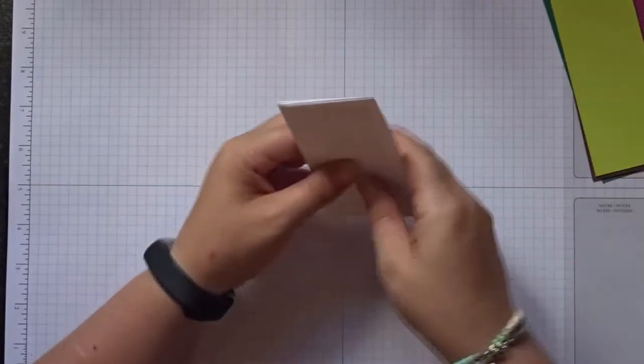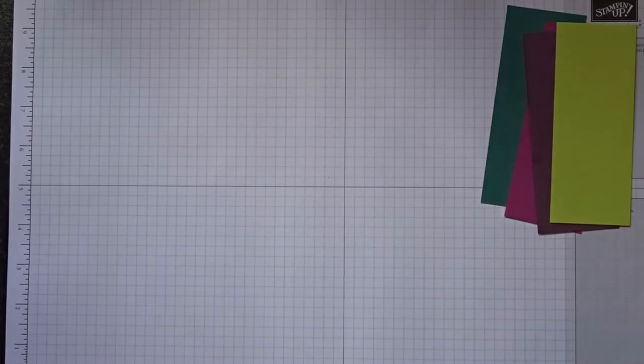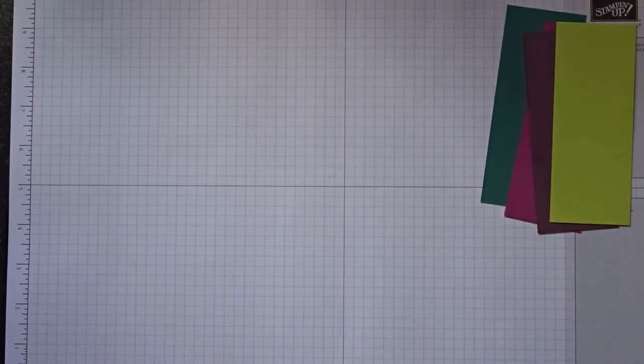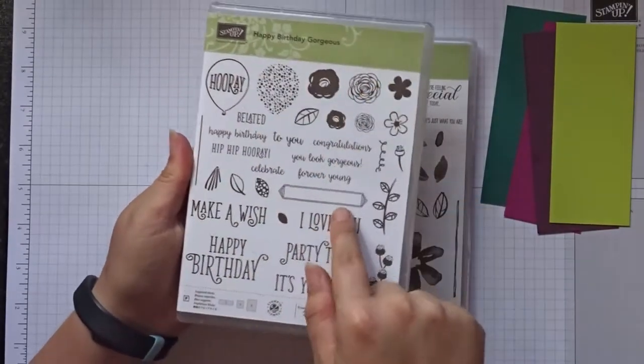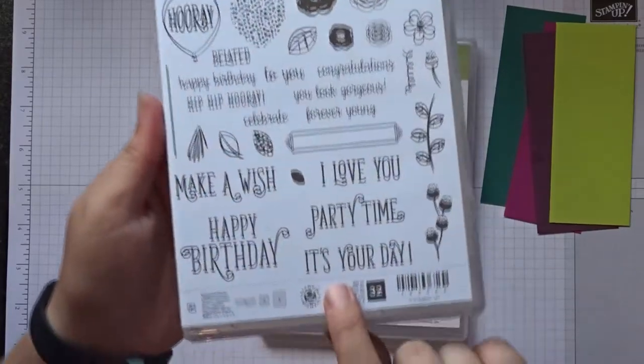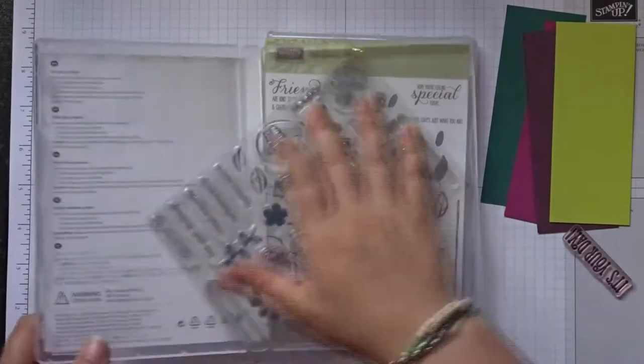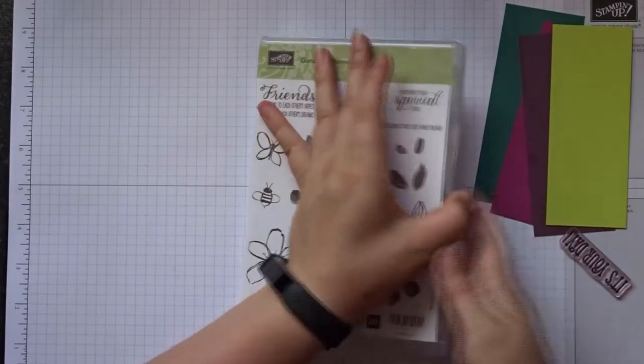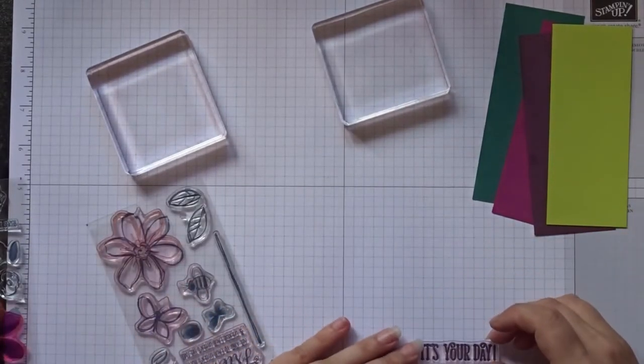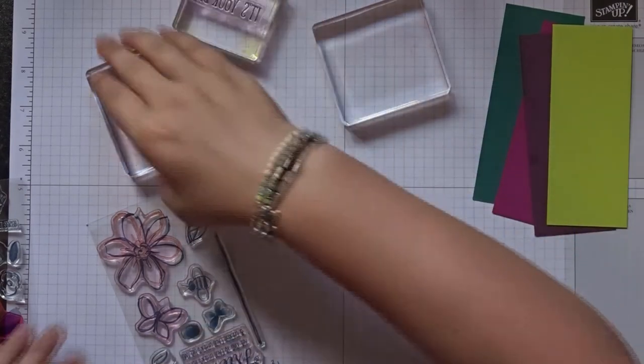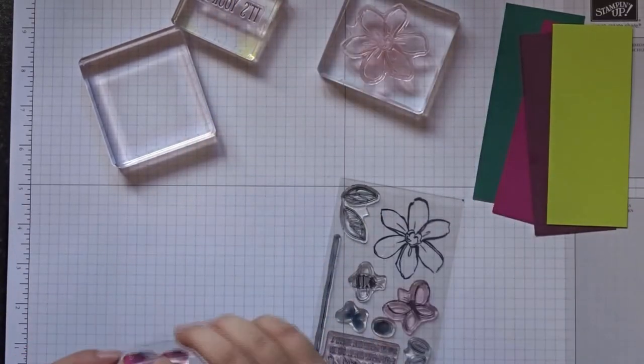We're going to do some stamping first. We don't need to do any stamping on the white cardstock so you can put that to one side. What we do need to do is color on color stamping using one of the stamp sets that's in our current catalog which is Garden in Bloom. I'm absolutely loving this one at the moment, and we're also going to use a sentiment from the Happy Birthday Gorgeous set. We're going to be using "It's Your Day."